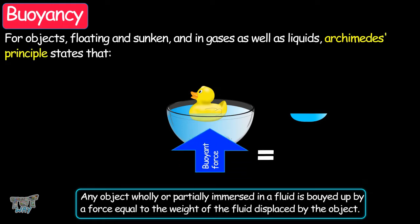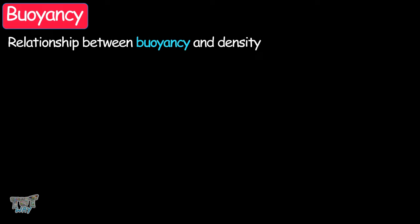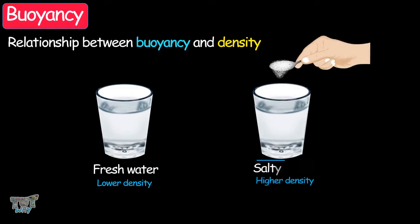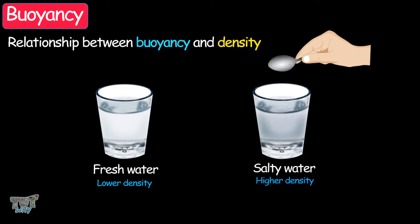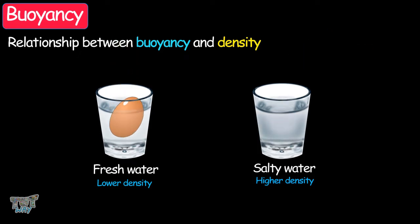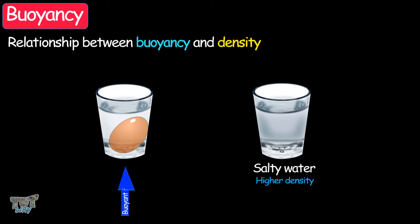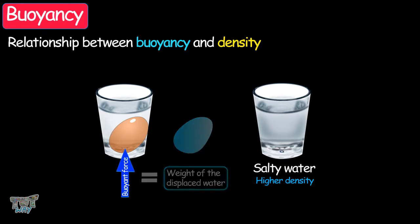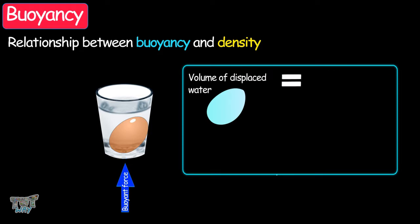Now we will learn the relationship between buoyancy and density. Take two glasses, each with the same water level — one with less dense fresh water, and the other with higher density water that has two spoons of dissolved salt. We learned that the buoyant force applied by the liquid to an immersed object is equal to the weight of the water displaced. The egg displaces water equal to its volume.